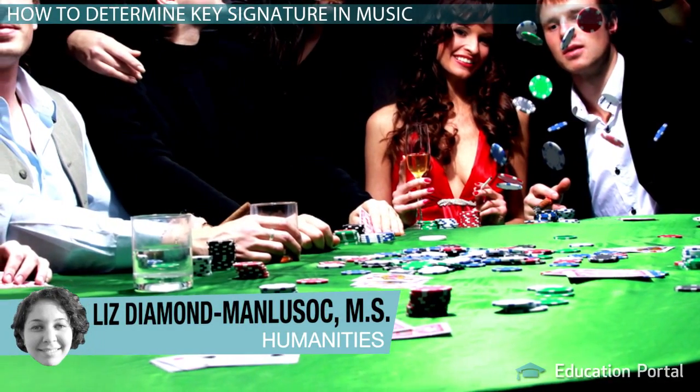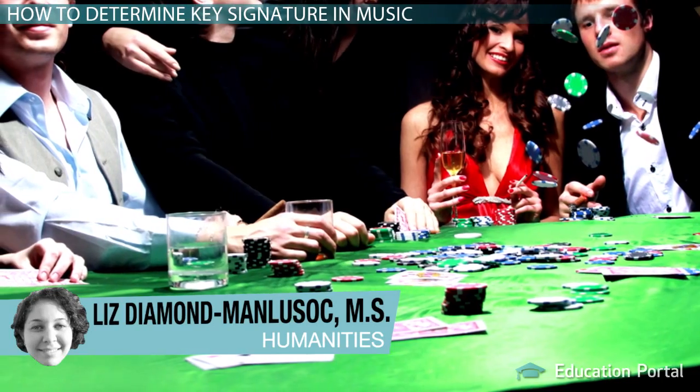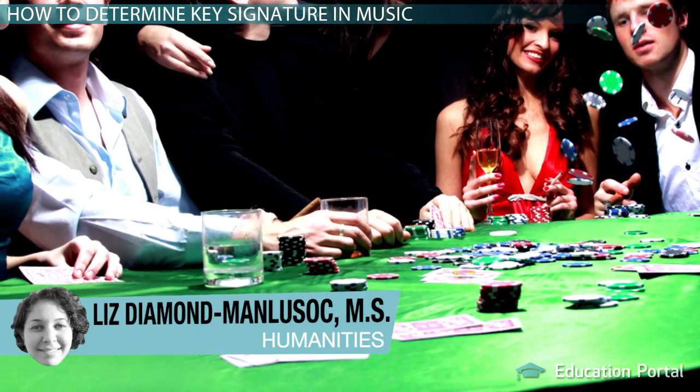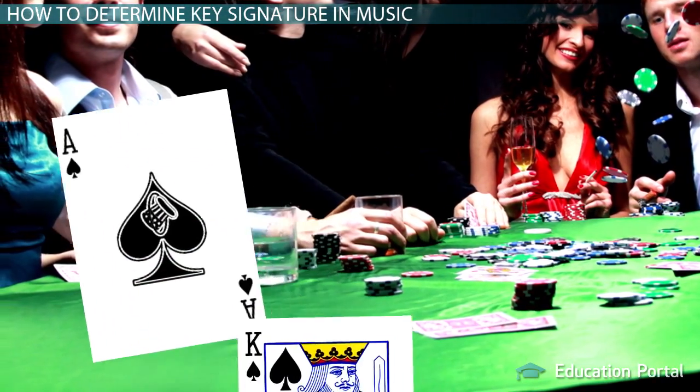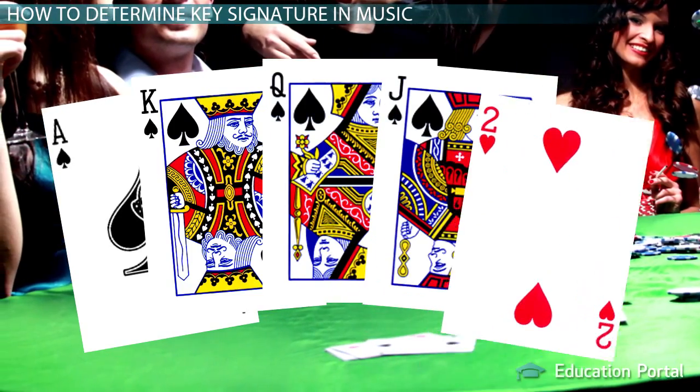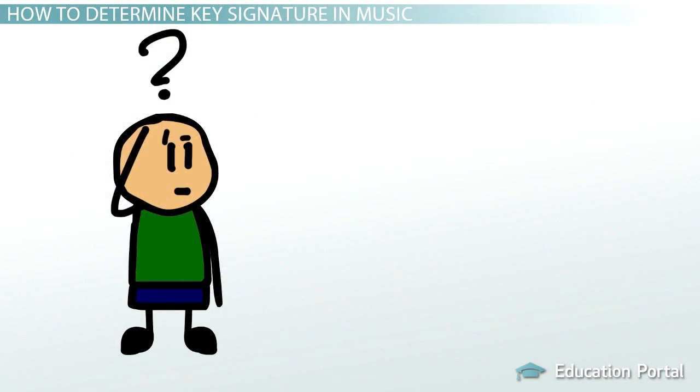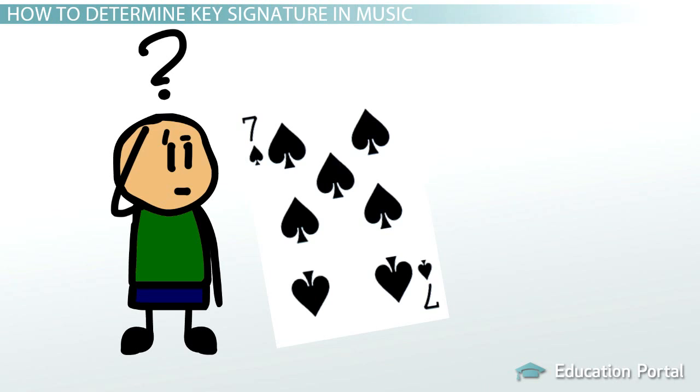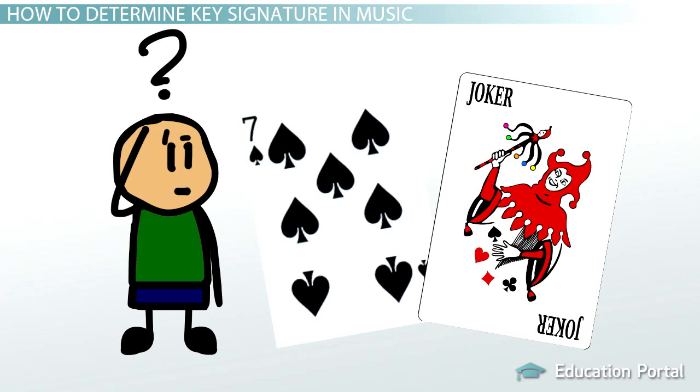The cards have all been dealt, and the chips are all in. You check your cards one last time to ensure your win. The ace, the king, the queen, the jack, and the wildcard deuce. Or wait, was that the wildcard seven? Or was it the joker? Don't you wish you had a key to remind you?